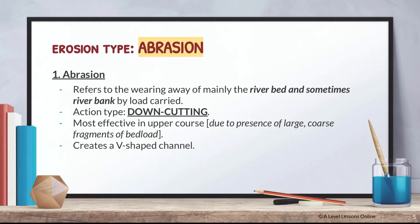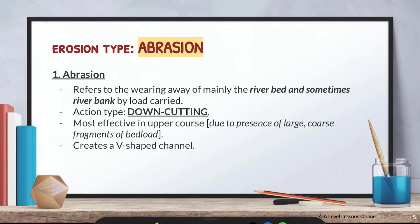The first erosion type we're covering is abrasion. Abrasion refers to the wearing away of mainly the river bed and sometimes the river bank. The action type for the river bed is usually a down-cutting action — it cuts downwards. Abrasion is most effective in the upper course due to the presence of large and coarse bed load.